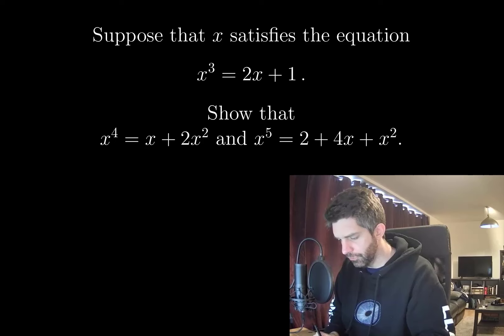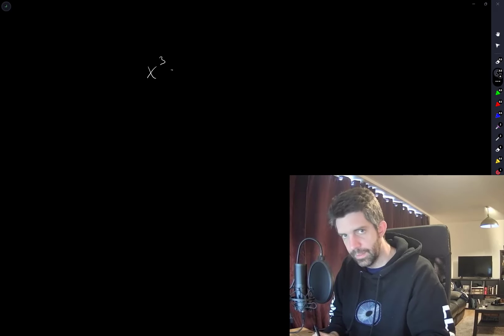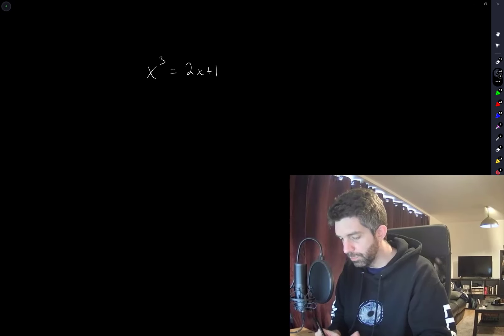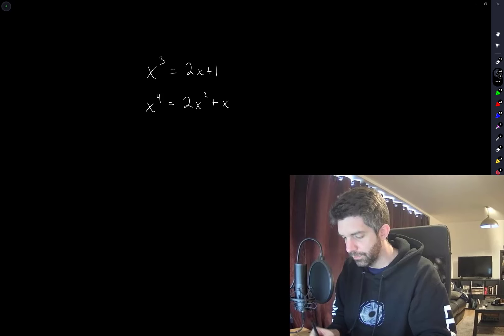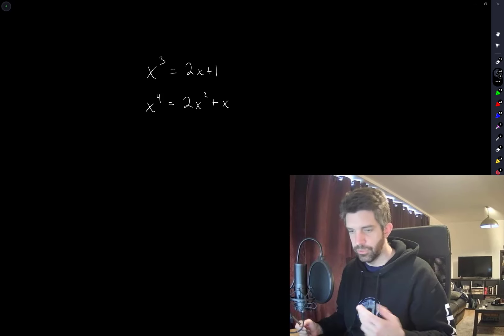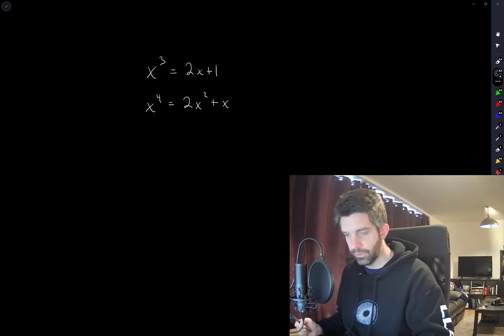Okay, so the first equation, the first thing we have to show is immediate. If x cubed is equal to 2x plus 1, as we're given, I can multiply both sides of this by x to get x to the 4 is equal to 2x squared plus x, which is just a rearrangement of what we've been asked for.